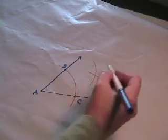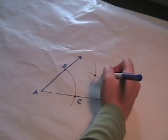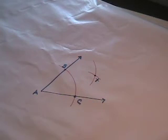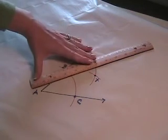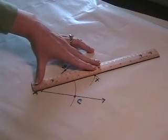Label the point where the two arcs intersect as X. Draw ray AX.